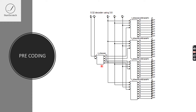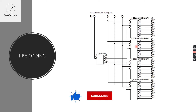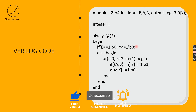In this diagram, there is no enable pin for the 2-to-4 decoder. But for designing the Verilog code in this video, I will be adding an enable pin so that we can control the whole system of the 5-to-32 decoder. Now let's move on to the coding part.